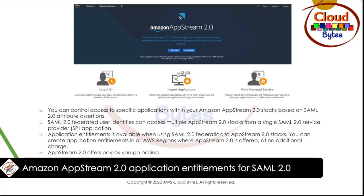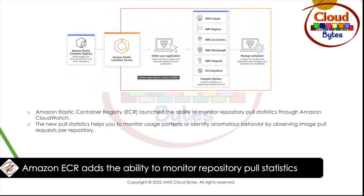Moving to the next news. Amazon ECR adds the ability to monitor repository pull statistics. Amazon Elastic Container Repository, or ECR, launched the ability to monitor repository pull statistics through Amazon CloudWatch. Amazon CloudWatch will now provide you statistics on the number of images pulled from your private ECR repository by default. The new pull statistics help you to monitor usage patterns or identify anomalous behavior by observing image pull requests per repository.